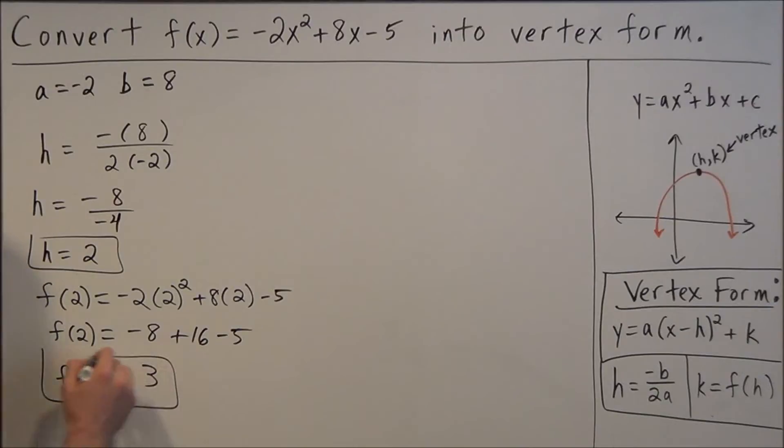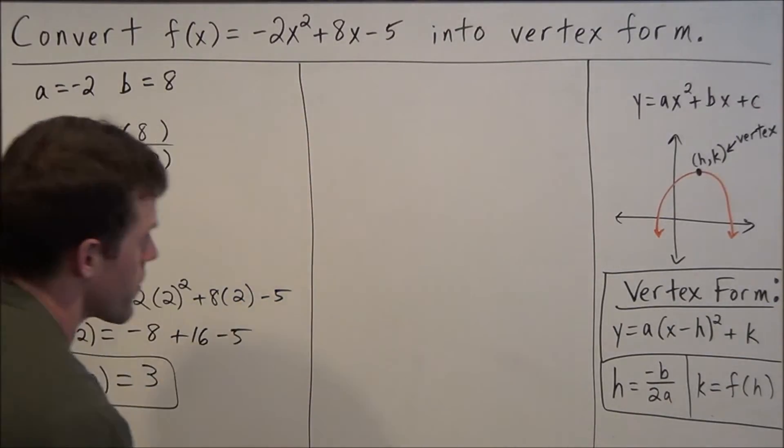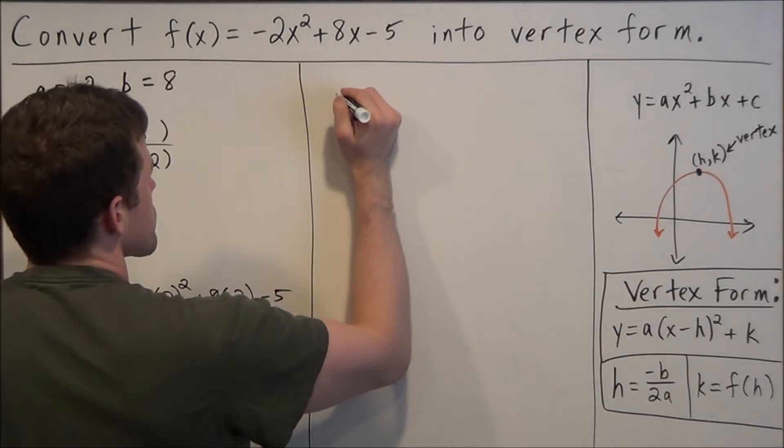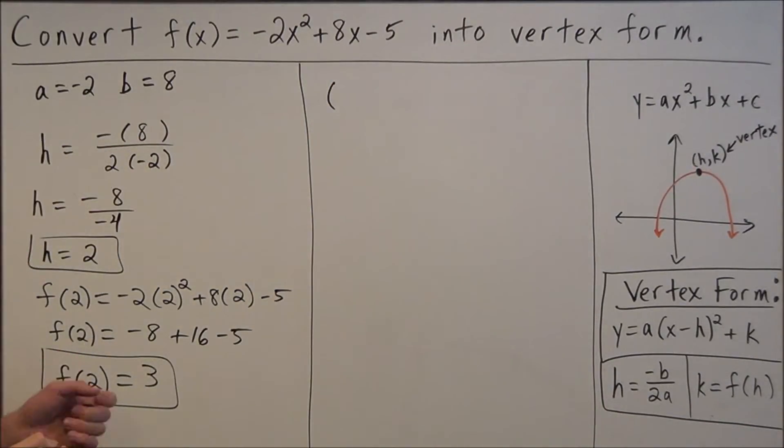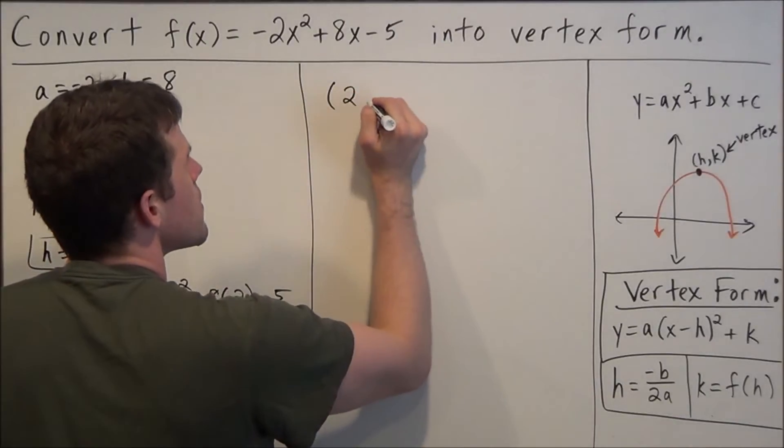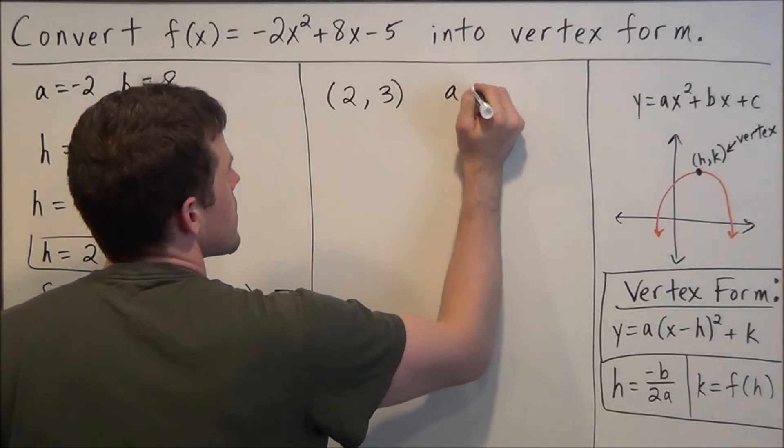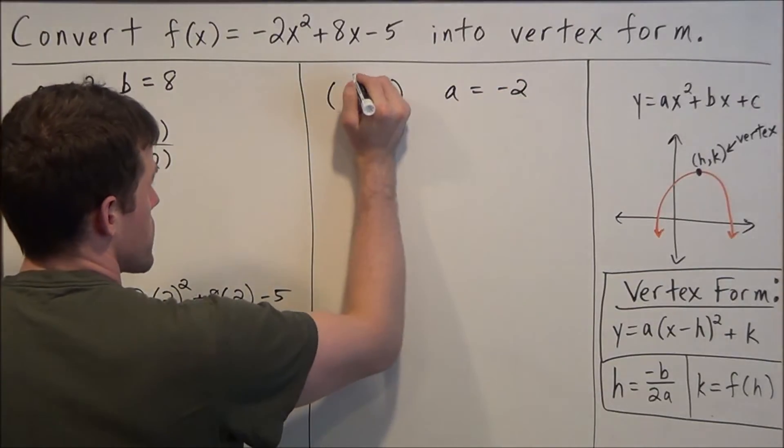So what this just told us, we're basically there and we're ready to complete this problem, is our vertex is the point (2, 3) and our a value from before is negative 2.